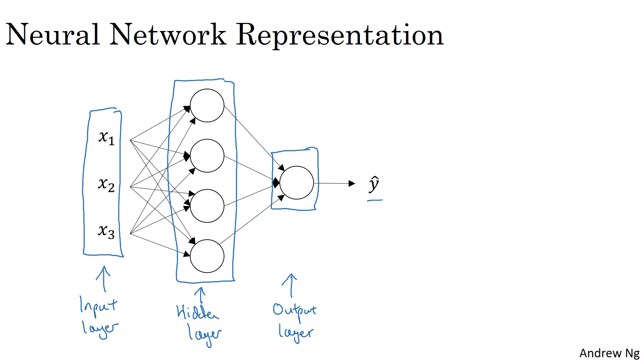In a neural network that you train with supervised learning, the training set contains values of the inputs, X, as well as the target outputs, Y. So the term hidden layer refers to the fact that in the training set, the true values for these nodes in the middle are not observed. You see what the inputs are. You see what the output should be. But the things in the hidden layer are not seen in the training set. So that kind of explains the name hidden layer.